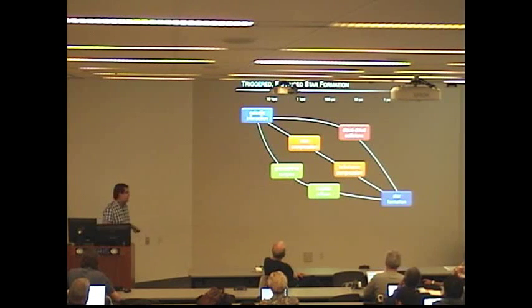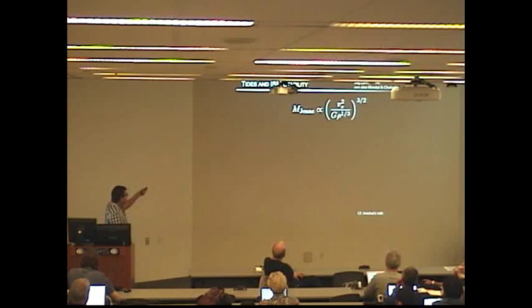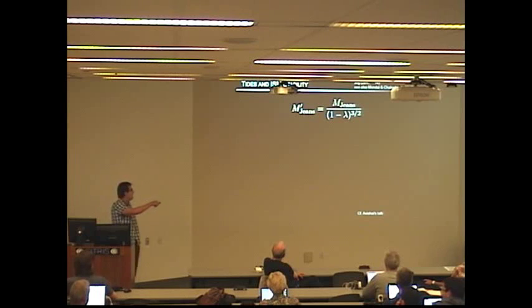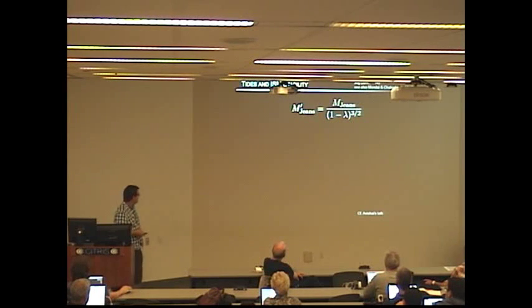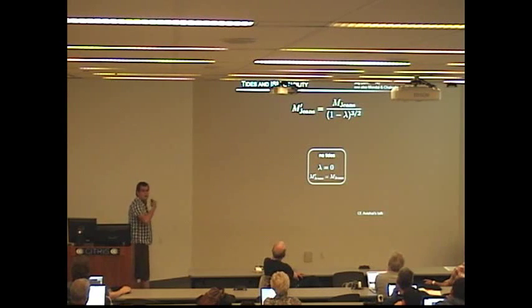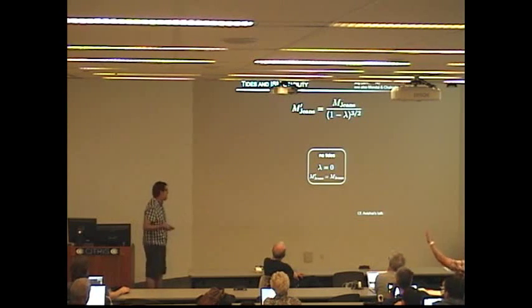So why should we care about tides in such problems? Well, if you look at the Jeans mass expression, the one you find in textbooks, this is what you have and you don't have anything about tides. So what Chandrasekhar-Jeans did is to re-derive the Jeans mass, having this correction factor where lambda is the strength of the tidal field. So with no tides, lambda equals zero and you retrieve the classical expression for the Jeans mass as planned. That's good.